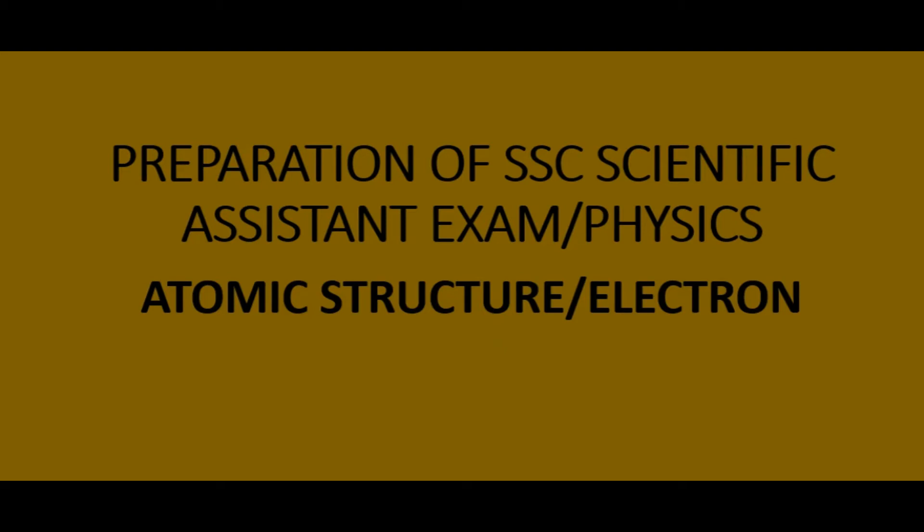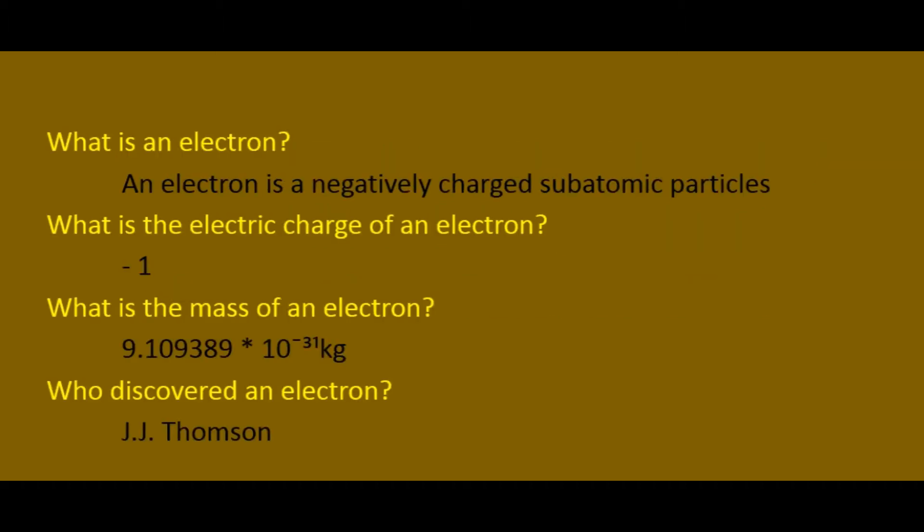Hi friends. In this video we see some questions related to electrons. First question: what is an electron? An electron is a negatively charged subatomic particle. An atom has three particles: neutron, proton, and electron. The neutron has no charge, the proton has a positive charge, and the electron is a negatively charged particle.